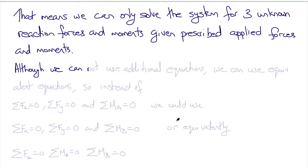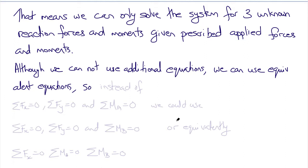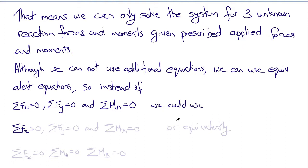Although we cannot use additional equations, we can use equivalent equations. For example, instead of using the sum of X forces, sum of Y forces, and sum of moments about point A equals zero, we could equivalently use those two force equations with the sum of moments about point B equals zero. Or we could use the sum of X forces equals zero, the sum of moments about point A equals zero, and the sum of moments about point B equals zero.